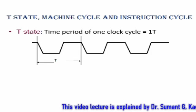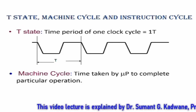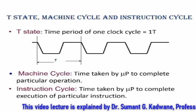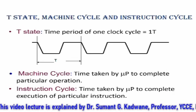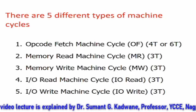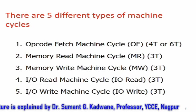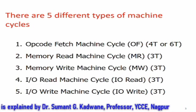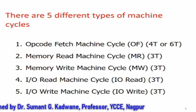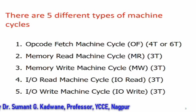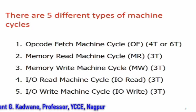Machine cycle is the time taken by the microprocessor to complete a particular operation. Instruction cycle is the time taken by the microprocessor to complete the execution of a particular instruction. There are five different types of machine cycles: first is opcode fetch machine cycle, second is memory read machine cycle, third is memory write machine cycle, fourth is input/output read machine cycle, and fifth is input/output write machine cycle. The opcode fetch machine cycle most of the times takes four T states, and for few instructions it may also take six T states. All other machine cycles will always take three T states.